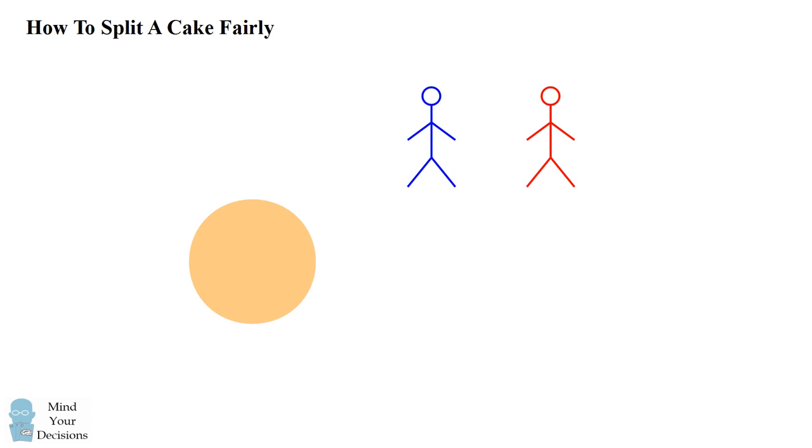Imagine a cake is to be split between two people, blue and red. There are many different ways that blue and red can split up the cake. Imagine blue makes the offer to cut the cake into two pieces and then choose one of the pieces first. Naturally, this is not a fair offer. Blue is tempted to cut the cake into two unequal pieces and then take the larger piece for himself. So this is not a fair way to split the cake.